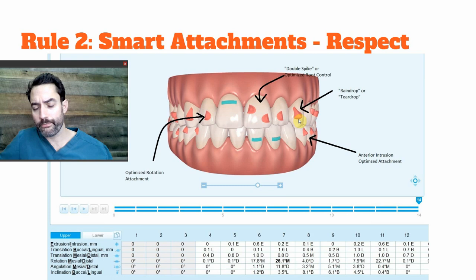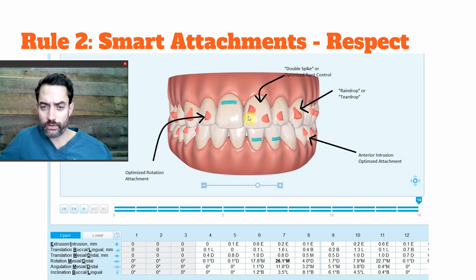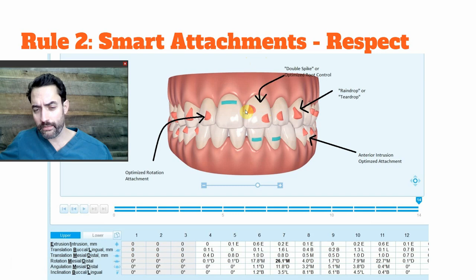The double spike attachment relates to root torquing. If a tooth shows, say, a 5.1-degree mesial tip torque, you need to verify that's actually required. If I'm tipping the crown mesially I'm torquing the root distally — or in this case, a mesial root torque that seems completely unnecessary. I would double-click, zero it out, see if that's a better treatment plan, and then remove the double spike. These are abstract concepts that take practice.